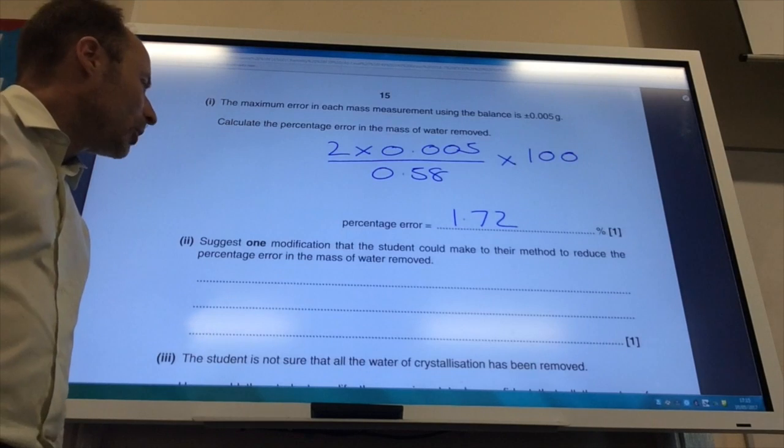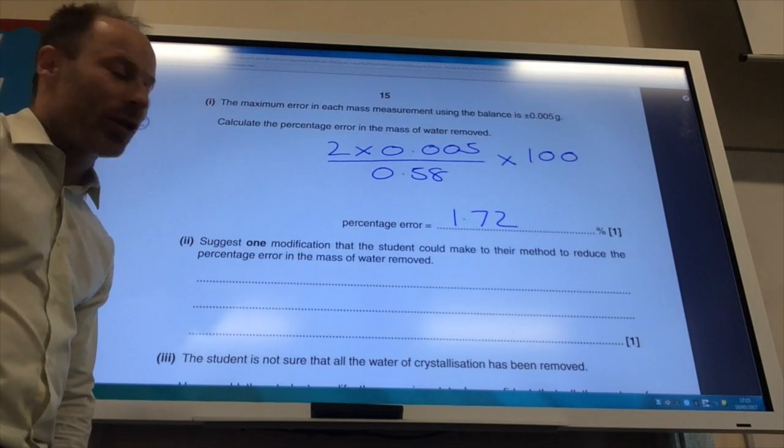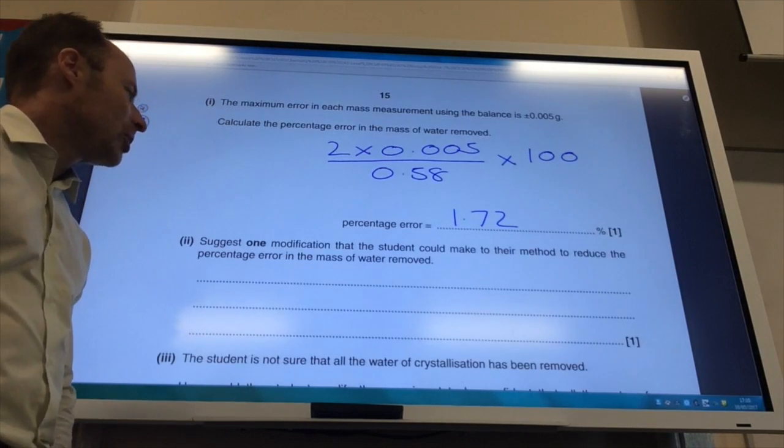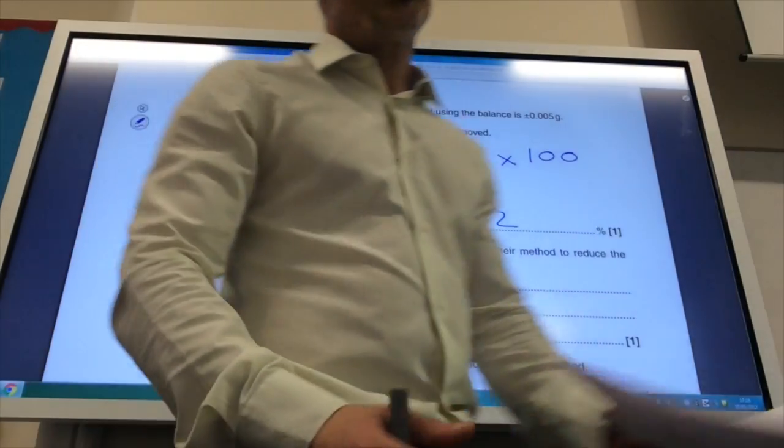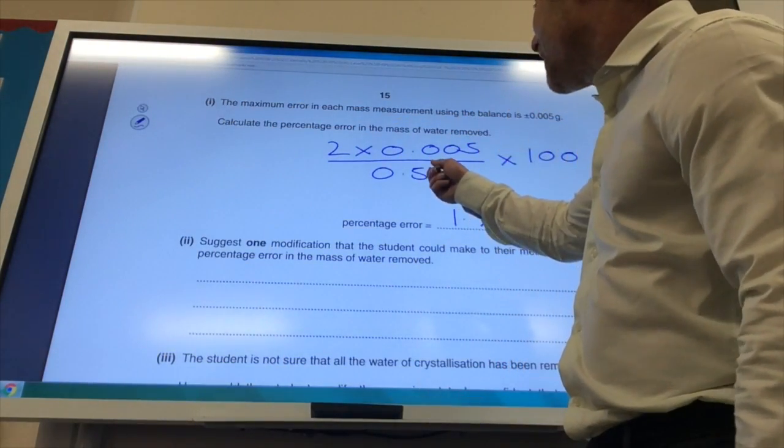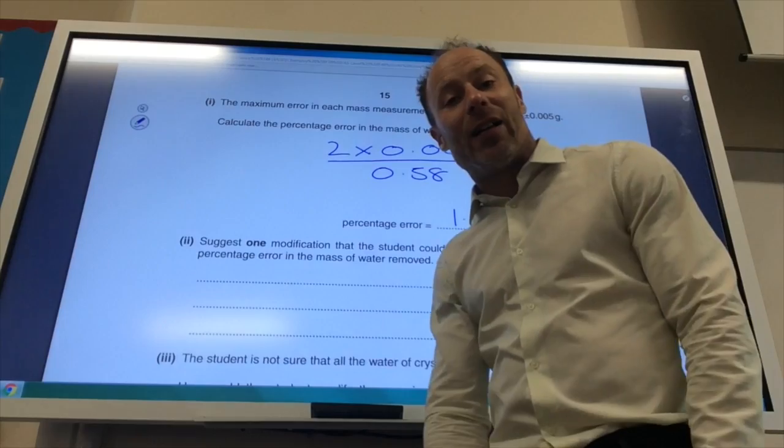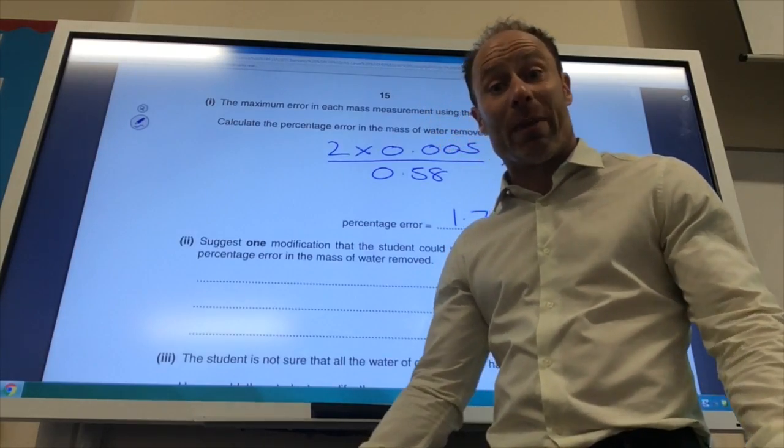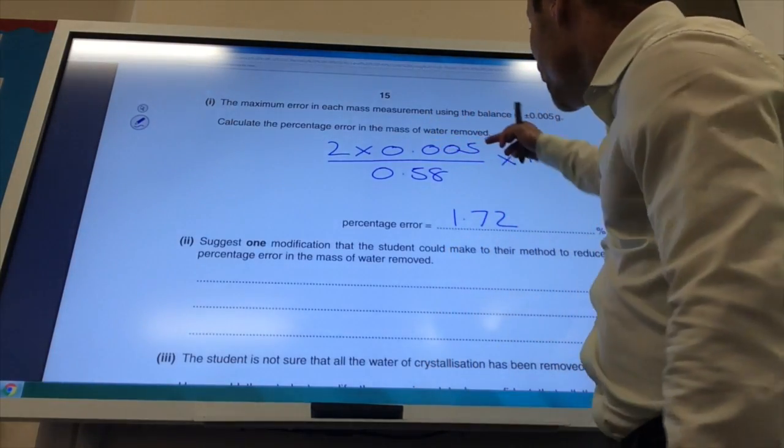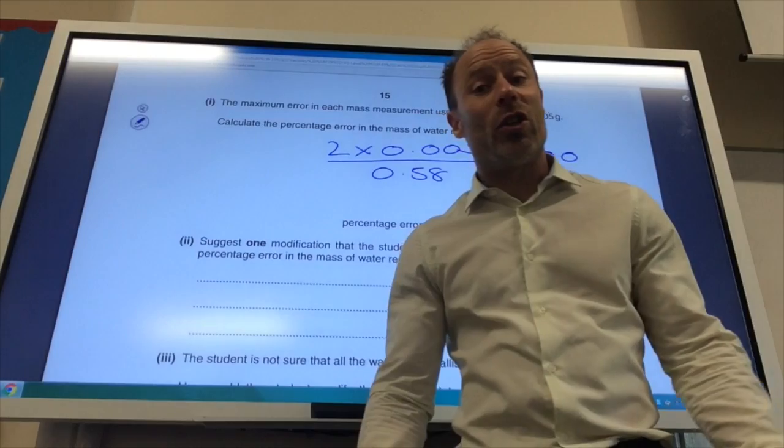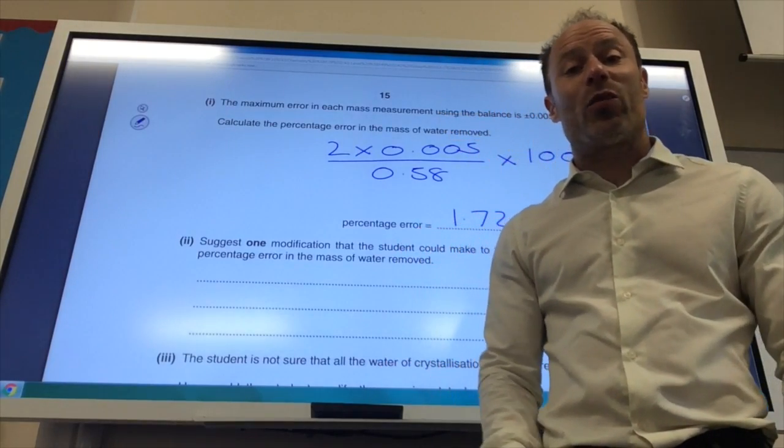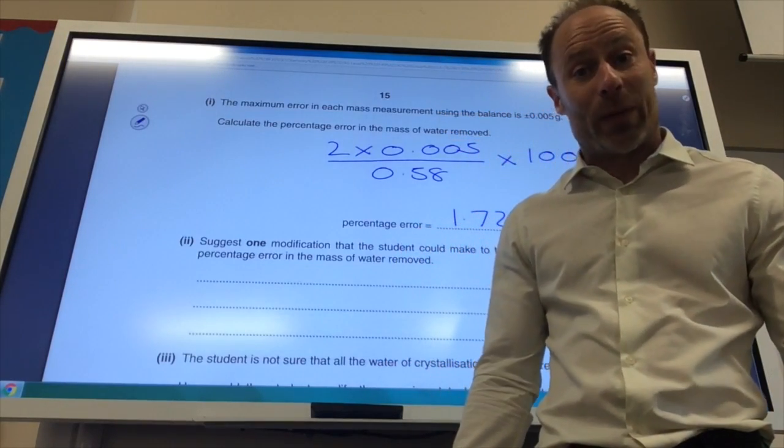So, just one modification that a student could use to their method to reduce percentage error. Well, if you want to reduce percentage error, you could make this number bigger, so you would use a larger mass, or you make this number smaller, so you use a balance which measures to three decimal places.